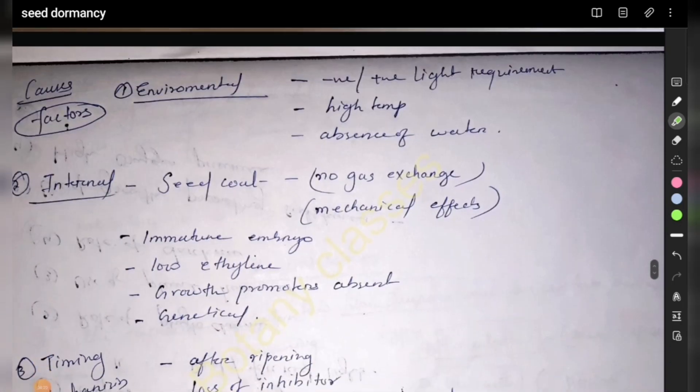Next are the causes of dormancy. First is environmental, either extreme conditions or absence of ideal conditions: high temperature, absence of water, or excess water.